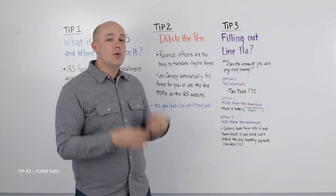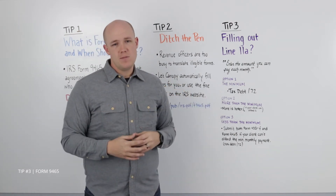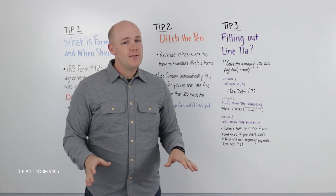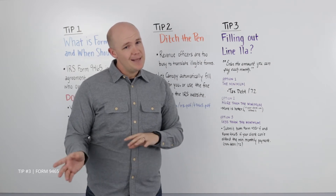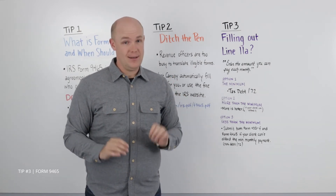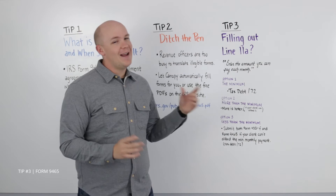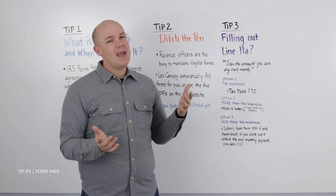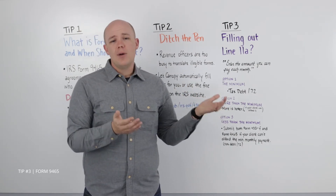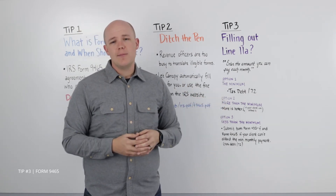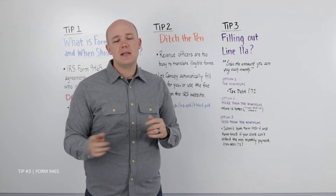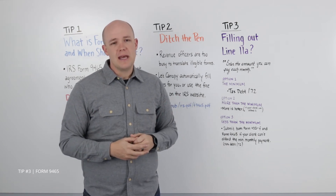Option number two: more than the minimum. The IRS doesn't mind if your client pays off their debt in less than 72 months — in fact, they like it a lot. If your client has the ability, paying more than the minimum will not only clear their debt faster, but will help reduce the amount your client will have to pay in penalties and interest in addition to their debt.